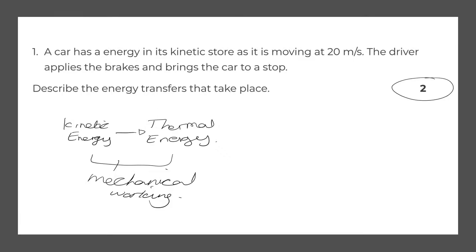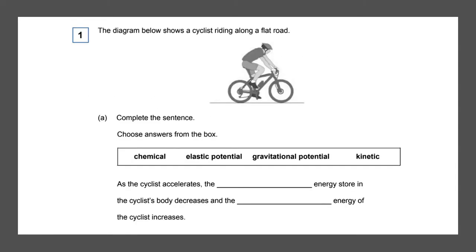Next question. The diagram below shows a cyclist riding along a flat road. Complete the sentence — choose answers from the box. Chemical energy is anything stored in an object, so it might be stored in the cyclist's body. Elastic potential is anything that's being stretched. Gravitational potential energy is anything which is not on the floor, and kinetic energy is stored in a moving object. So as the cyclist accelerates, the something energy stored in the cyclist's body decreases. This means it involves kinetic energy because the cyclist is riding along, so the kinetic energy is going to increase.